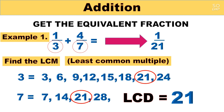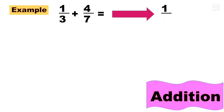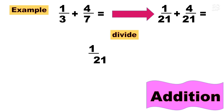So it becomes 1 over 21 plus 4 over 21. This is the equivalent fraction of 1 third plus 4 seventh — we replace the denominators with the LCD of 21. Continuing: 1 over 3 plus 4 over 7 equals the equivalent fraction 1 over 21 plus 4 over 21. The next step: divide 21 by the first denominator — we rewrite 1, the numerator of the first fraction, over 21. Then 21 divided by 3 gives us 7.